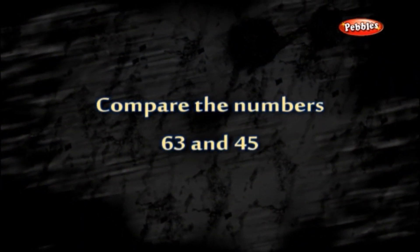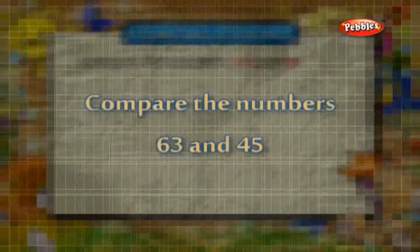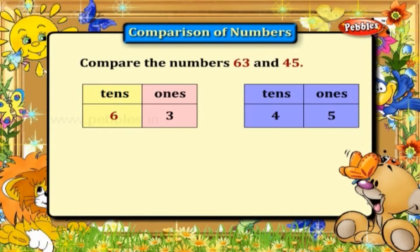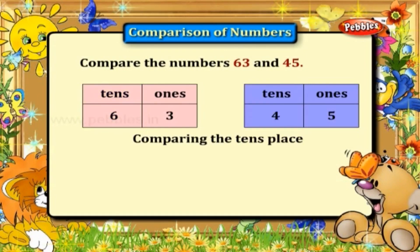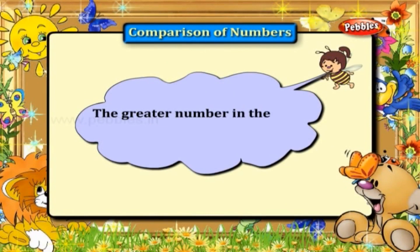Compare the numbers 63 and 45. In 63, 6 is in the tens place, and in 45, 4 is in the tens place. When you compare these two numbers, 6 is greater than 4. So 63 is greater than 45. The greater number in the tens place is the greater of them.